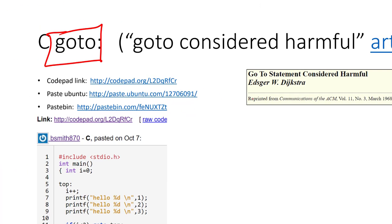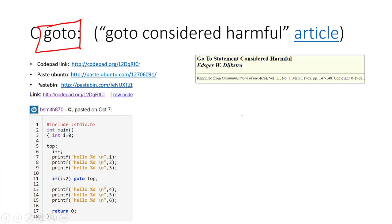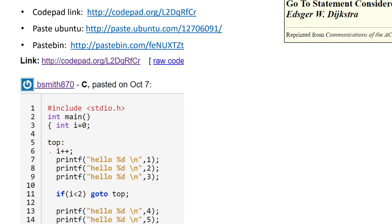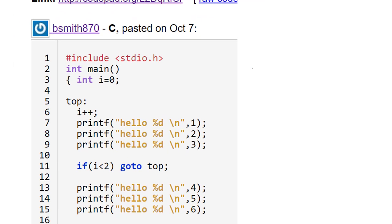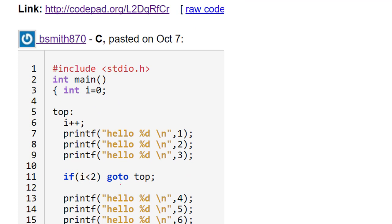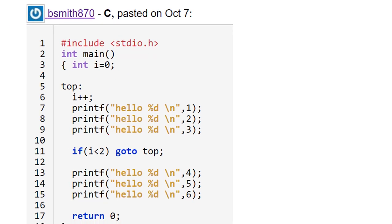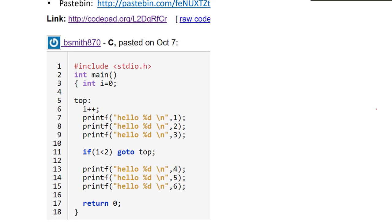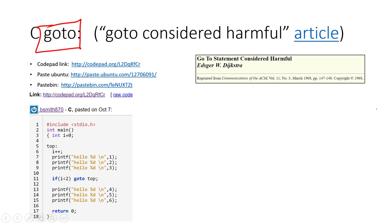And he was making an argument for removing the goto statement from coding languages because it just led to spaghetti code. It was hard sometimes to see a goto that might be embedded somewhere, and you would write code. One could write code that kind of could proceed linearly down. It would go somewhere, it could jump in, jump back out, jump back in, jump back out, jump back in, jump back out, jump back in, jump back up.